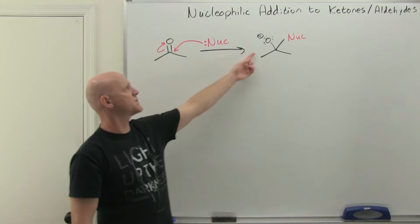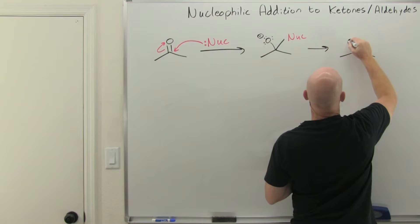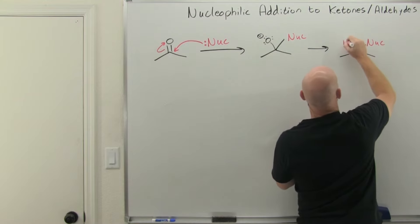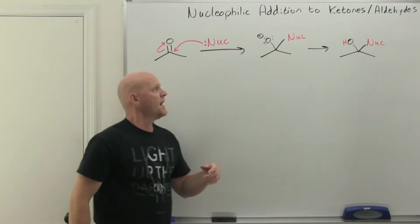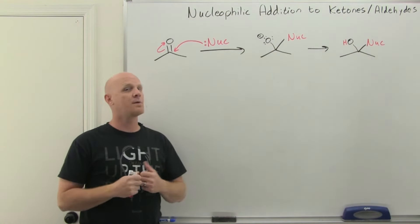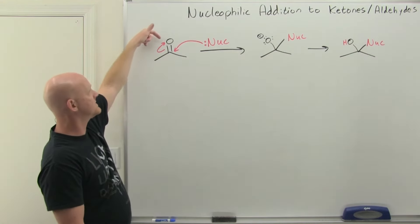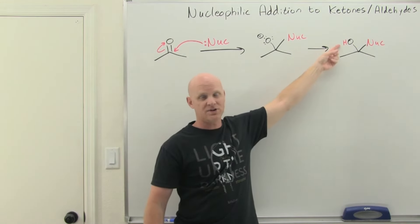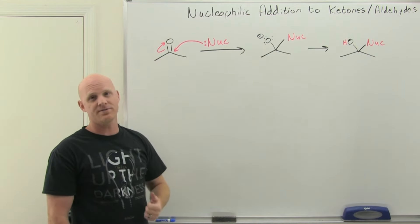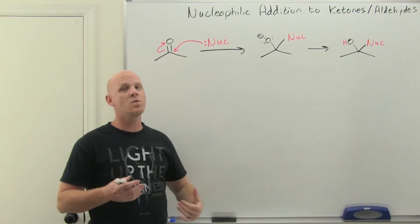At this point, we protonate the oxygen to form an alcohol. This is analogous to addition reactions with alkenes, except now we're adding to both sides of a carbon-oxygen double bond rather than a carbon-carbon double bond. The oxygen always gets a hydrogen in all the reactions we look at, while the carbonyl carbon receives a variety of different nucleophiles — oxygen nucleophiles, nitrogen nucleophiles, carbon nucleophiles, and hydrogen nucleophiles throughout this chapter.